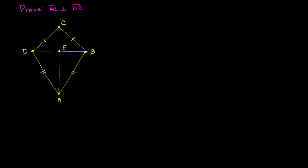Our toolkit includes the side-side-side postulate: if the three sides are congruent, the two triangles are congruent. We have side-angle-side: two sides and the angle in between are congruent, then the triangles are congruent. We have ASA: two angles with a side in between. And AAS: two angles and then a side. These are our postulates — we assume they imply congruency.